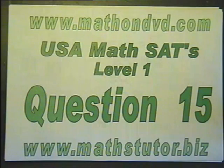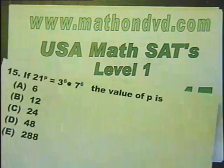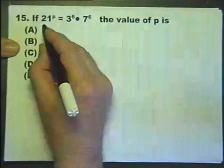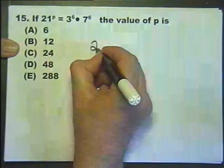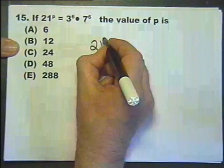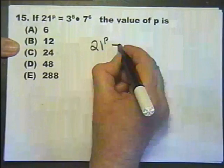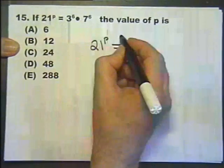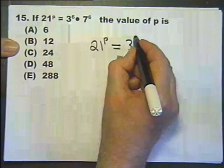Math SATs Level 1 Question 15. We're told that 21 raised to the power of p, that's how you read that, equals 3 raised to the power of 6.